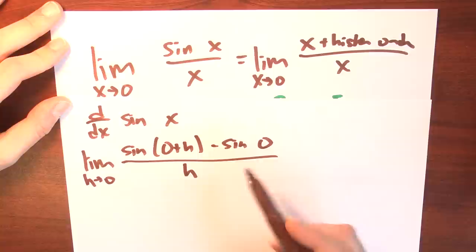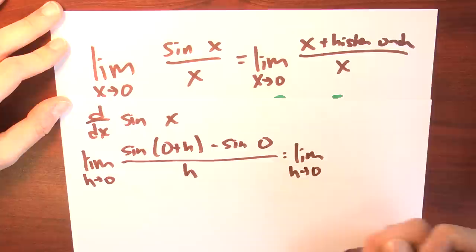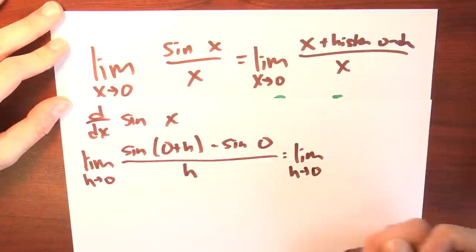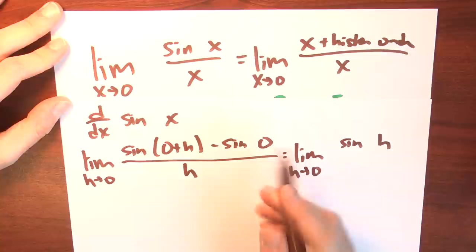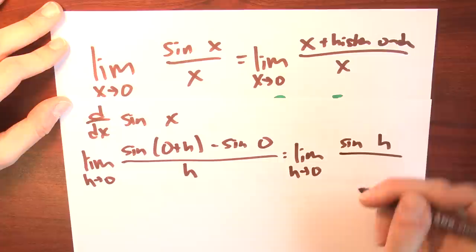How do I calculate this limit? It's the limit as h goes to 0 of sine of h minus sine of 0. But sine of 0 is 0, so the whole numerator is just sine of h divided by h. That's exactly the limit we started with, just with x replaced by h.